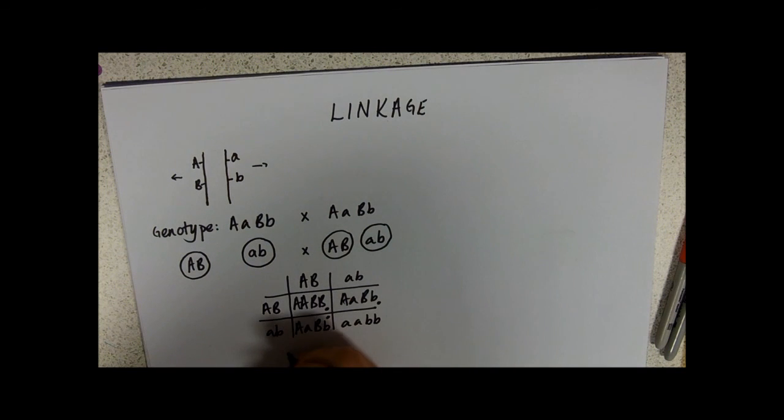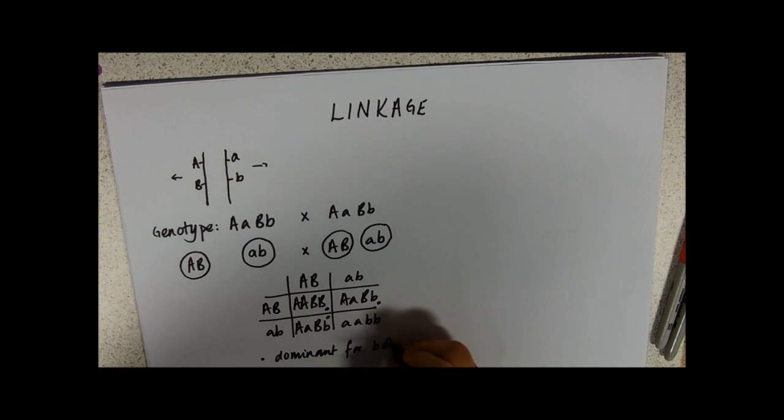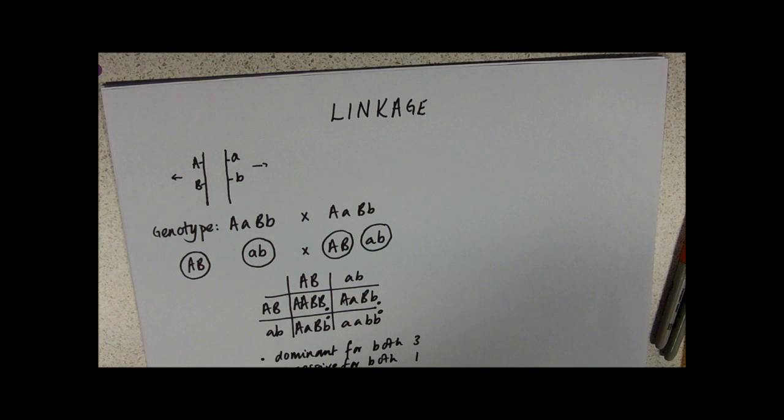Parent one, parent two: big A big B, big A big B, big A little a big B little b, big A little a big B little b, little a little a little b little b. We can see now that this has got dominant alleles of both characteristics, so this is dominant for both and we've got three of those, to the one that is recessive for both.